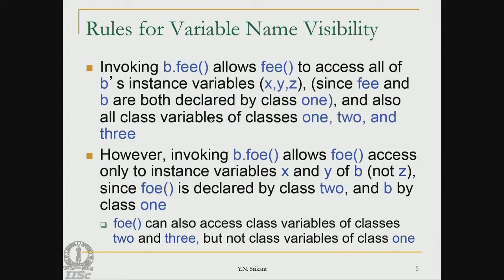The next topic is variable name visibility. Suppose we call the method b dot phi. Phi is defined in each one of the classes, so there is a local phi available in classes 1, 2, and 3. This allows phi to access all the instance variables of b — there is no problem because it is a local method defined inside the receiver's class.